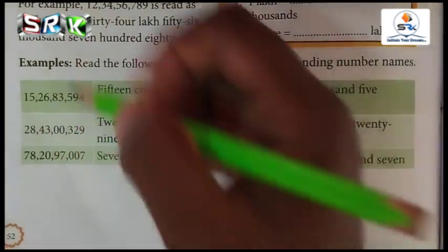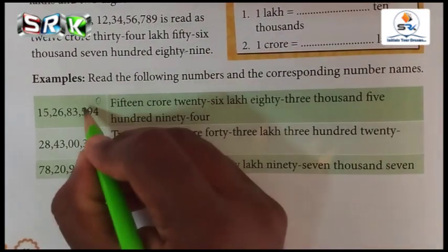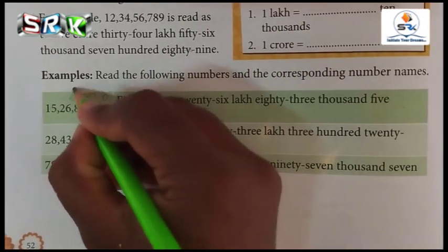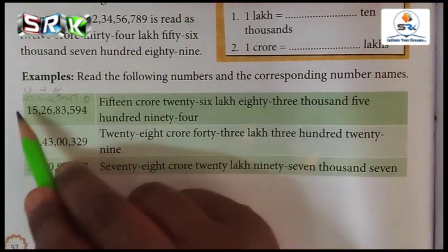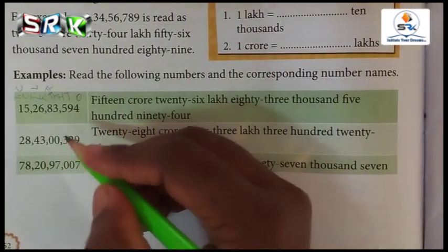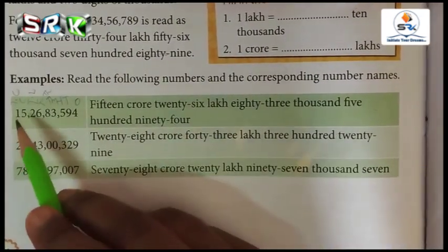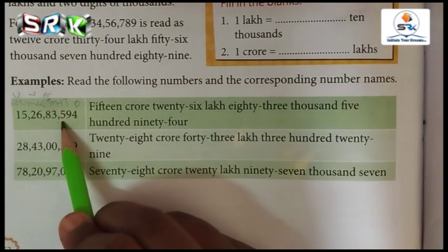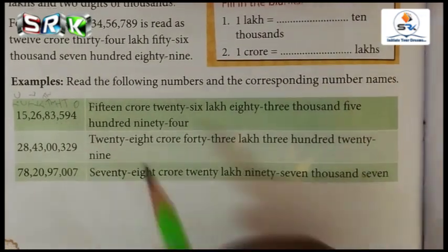Same method — first write the numbers in the place values. Now read this number: 15,26,83,594. So how to read using the same method — you are going to write the number name. The number name is fifteen crores twenty-six lakh eighty-three thousand five hundred and ninety-four.